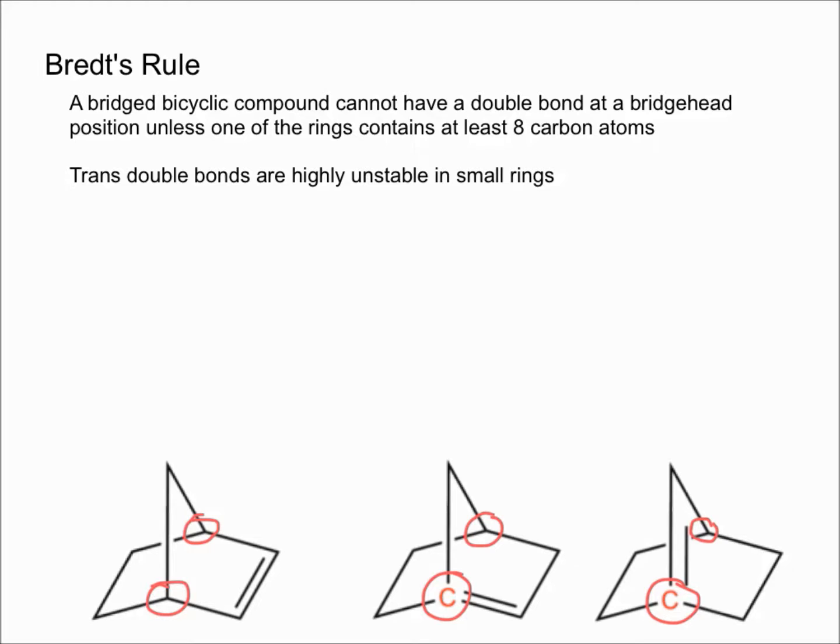Since none of these rings have more than eight carbons, these would probably not form, and if they did, they would be highly unstable.